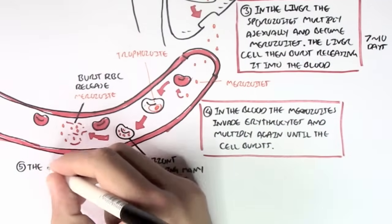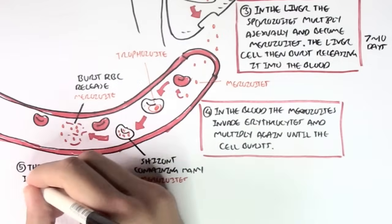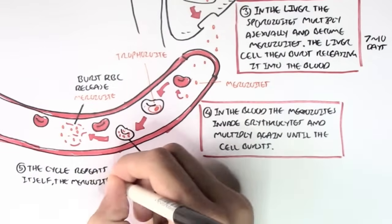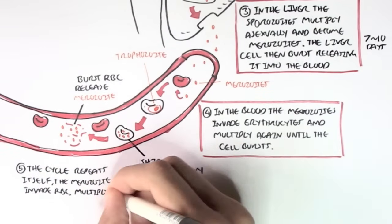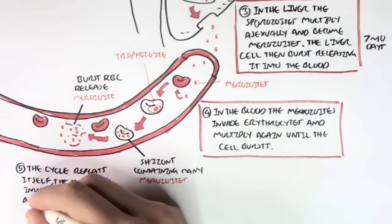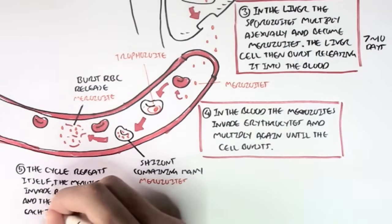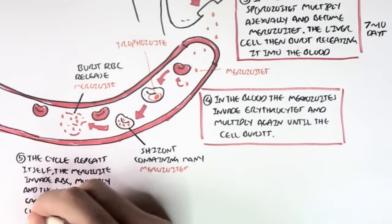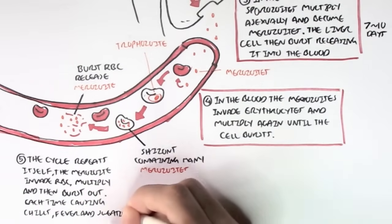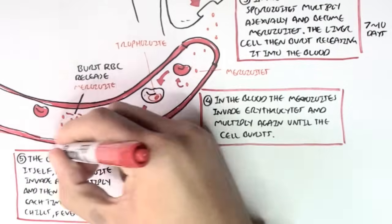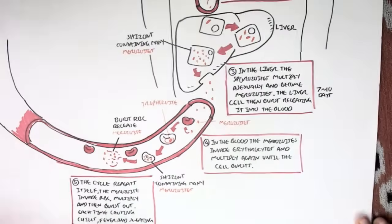So, what will happen with all these merozoites? Well, the cycle will just repeat itself. The merozoites will invade more red blood cells, they will multiply, and they will burst out. Each time this happens, this will cause chills, fever, and sweating. The chills, fever, and sweating are typical symptoms of malaria.